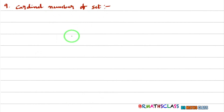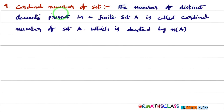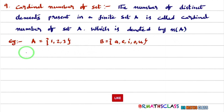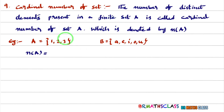Cardinal number of a set. What is meant by the cardinal number of a set? The number of distinct elements present in a finite set A is called the cardinal number of set A, which is denoted by n(A). Consider two finite sets: how many elements are present in set A? Three elements are present, so n(A) = 3.